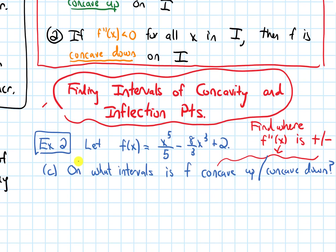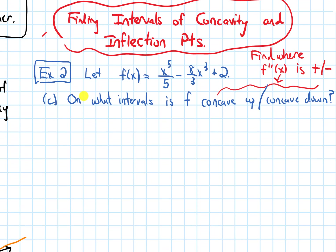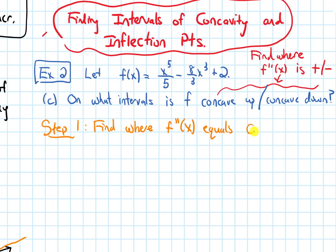This is going to be really similar to what we did with increasing and decreasing, except now for concavity we will need to do a sign chart of the second derivative rather than the first derivative. So step one is we need to find the cut points — that means finding where the second derivative equals 0 or is undefined.